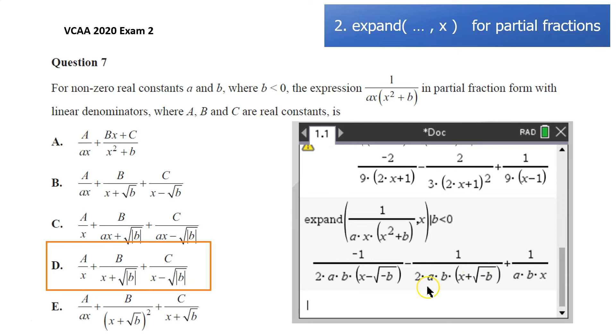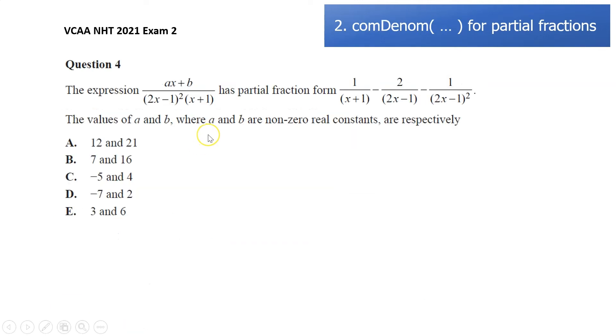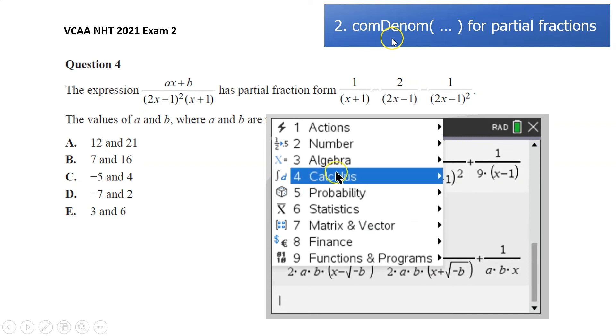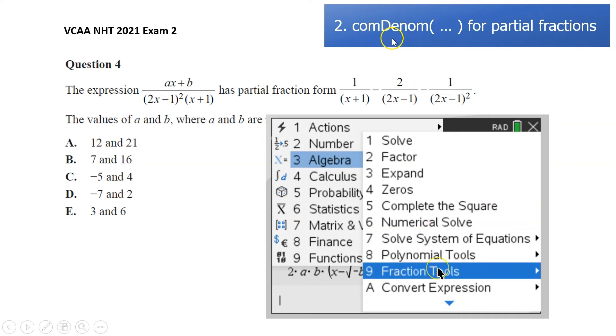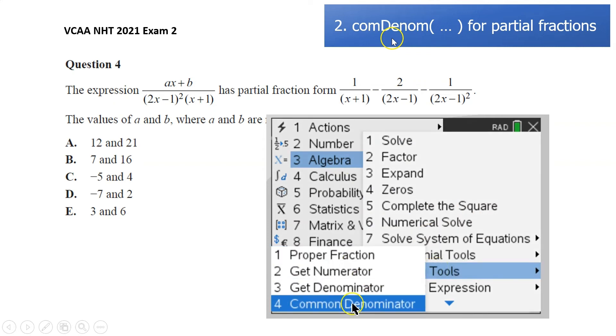So expand comma x for partial fractions. Sometimes the question is in the reverse order. So here we've got the partial fraction form. We want to get the original form. We could test these and do expand on this one, but the other way to do it is using a common denominator function. So that is under menu, algebra, fraction tools, common denominator, or you can just type comdenom.